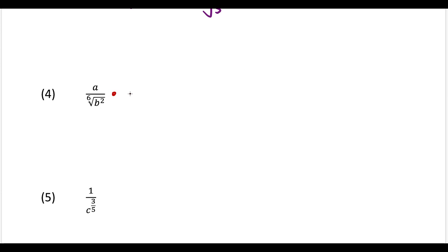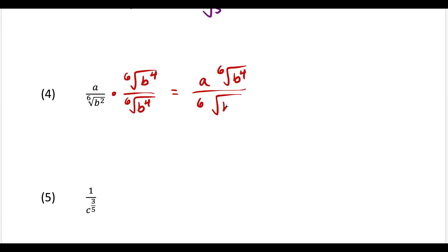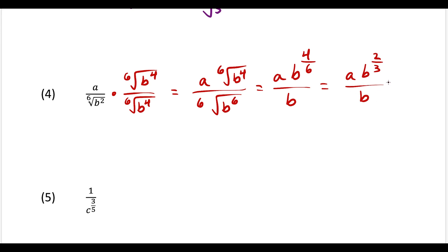For the fourth example, we want to get rid of the radical on the bottom. We multiply by the 6th root of b to the power of 4, because 2 plus 4 equals 6, matching the index. So we multiply top and bottom by the 6th root of b to the 4th. On top we get a times the 6th root of b to the 4th, and on the bottom we get the 6th root of b to the 6th, which simplifies to just b. To clean up the top, we convert the 6th root of b to the 4th to rational exponent form — that's b to the power 4 over 6 — which reduces to b to the 2/3. We then rewrite b to the 2/3 as the cube root of b squared, giving us a times the cube root of b squared, over b.